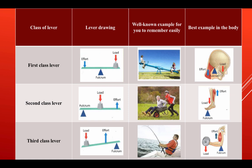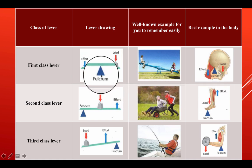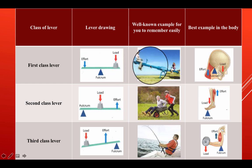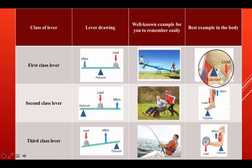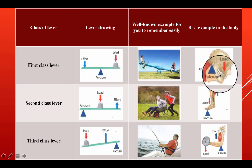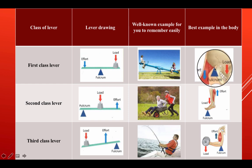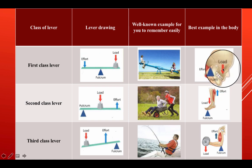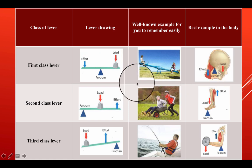First class lever: the fulcrum is in the middle and the effort and load are at each end. A well-known example of this would be a seesaw. You can see this in the body when you look down — the fulcrum comes to the top of the spine, the effort is coming downwards and the load is on the front, which would force your head forward.